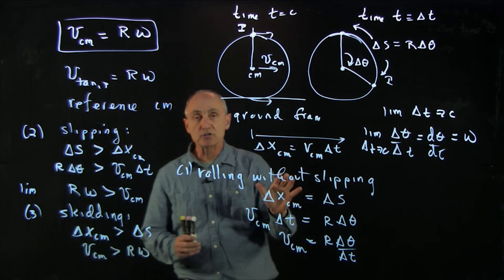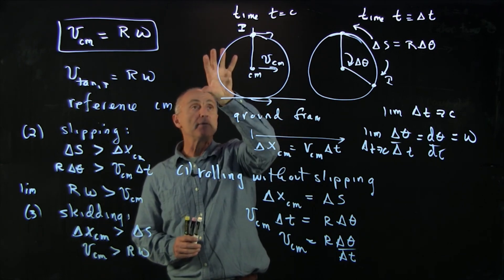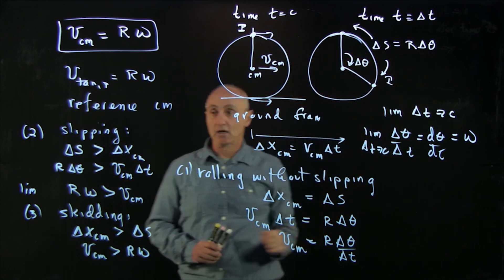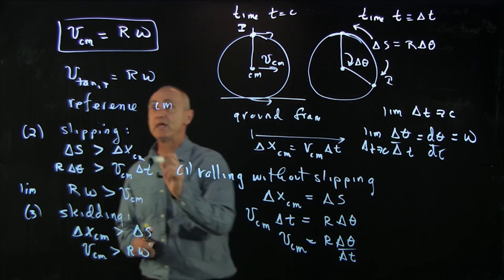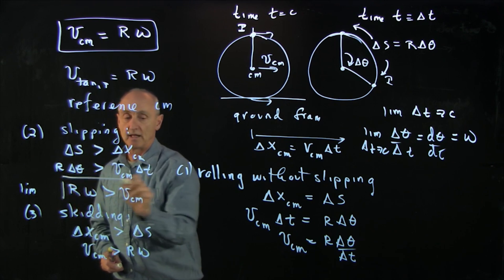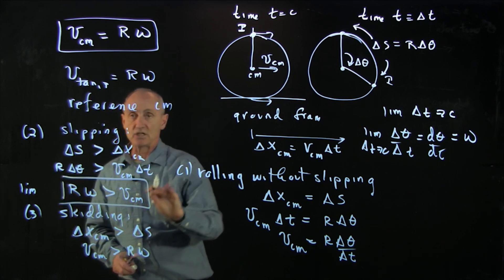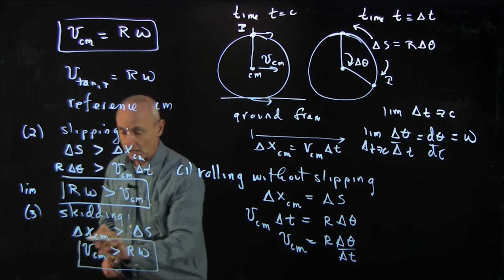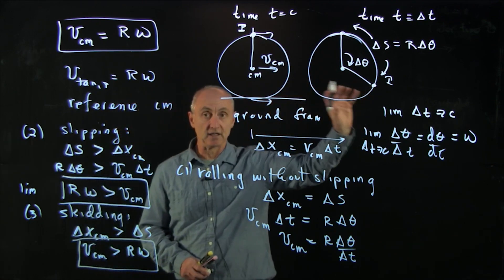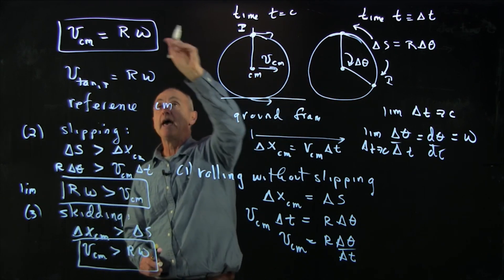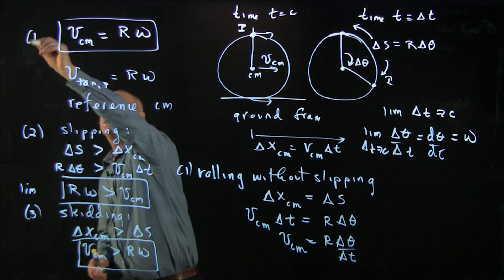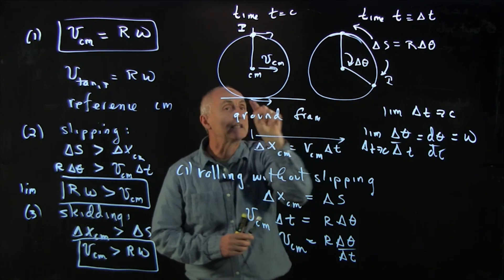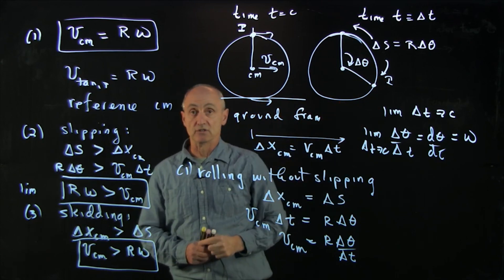And again, what that corresponds to in the skidding case, imagine the limit where it's not rotating at all. This would be 0. And it's just skidding along the ground, v cm. So we have our three conditions. We have the slipping condition where it's spinning faster than it's translating. We have the skidding condition where it's translating faster than it's spinning. And we have the rolling without slipping condition in which the arc length is exactly equal to the horizontal distance along the ground.